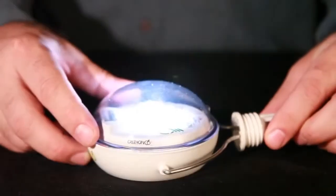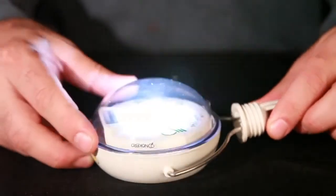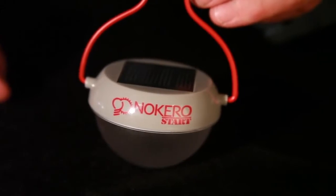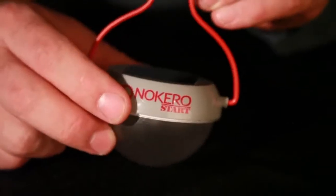The N222 is the newest product in our suite of solar lighting products. On the opposite end of the spectrum of our suite is the N180 Start, which is the world's most affordable solar light bulb.